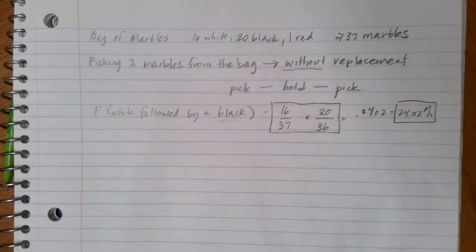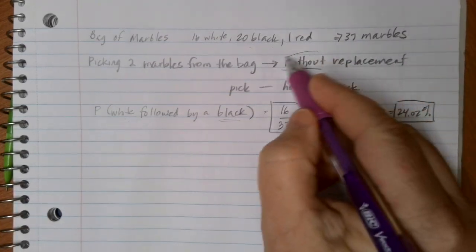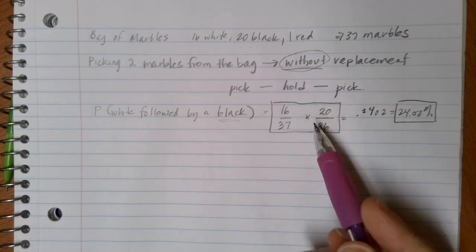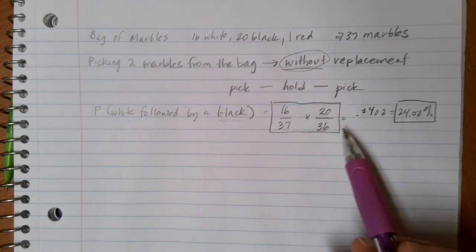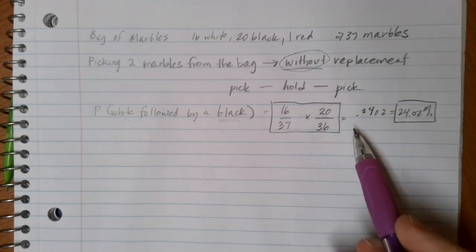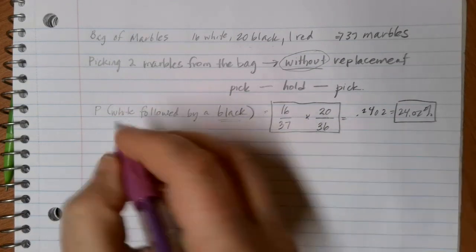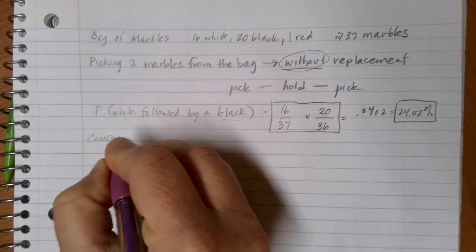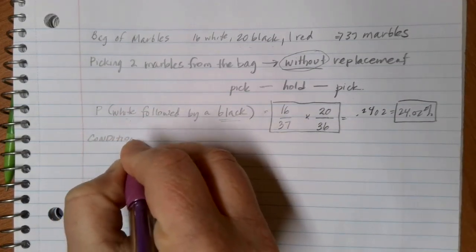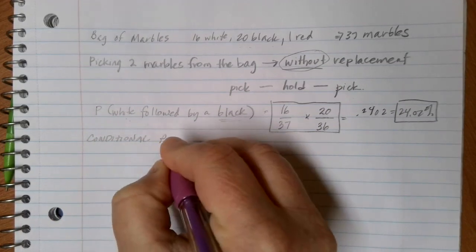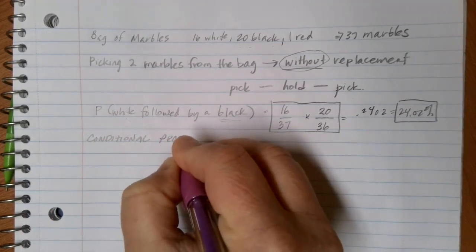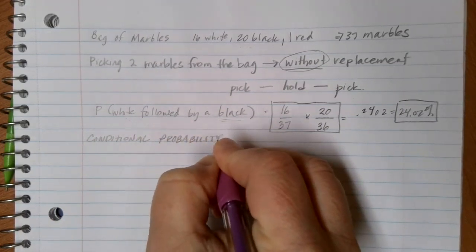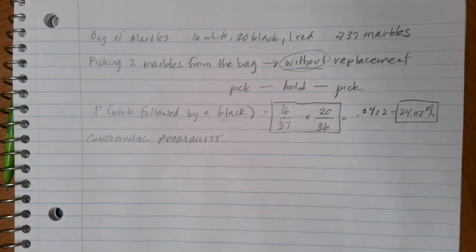So the idea here when we are not replacing is we're changing the probability base set for the second pick, and that's going to affect the probabilities. The term we use for this is called conditional probability, because whatever we do first is going to change or affect the probability of whatever comes second.